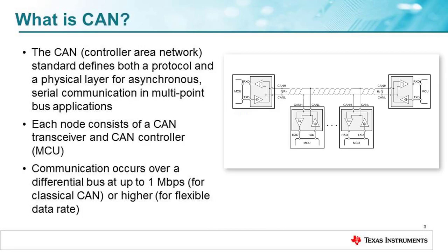Controller Area Network, often referred to as classic CAN, is a standard that defines both a protocol and a physical layer for asynchronous serial communication in multi-point bus applications. Each node consists of a CAN transceiver and a CAN controller, which is often integrated into the microcontroller. Communication occurs over a differential bus at up to 1 megabit per second for classical CAN, or higher rates for CAN-FD.